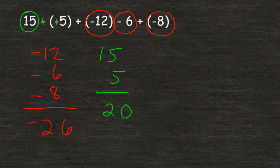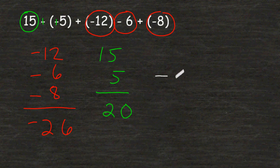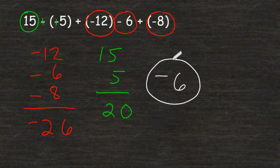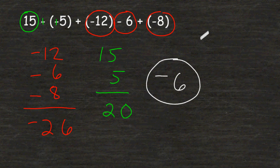We can see that we have more negatives than positives, so our answer will be negative. We can say that we have 6 more negatives than we have positives. So when adding and subtracting problems with multiple integers, you can start by adding all of the negatives together and all of the positives together, then subtract the resulting absolute values and use the sign of the number with the greater absolute value.